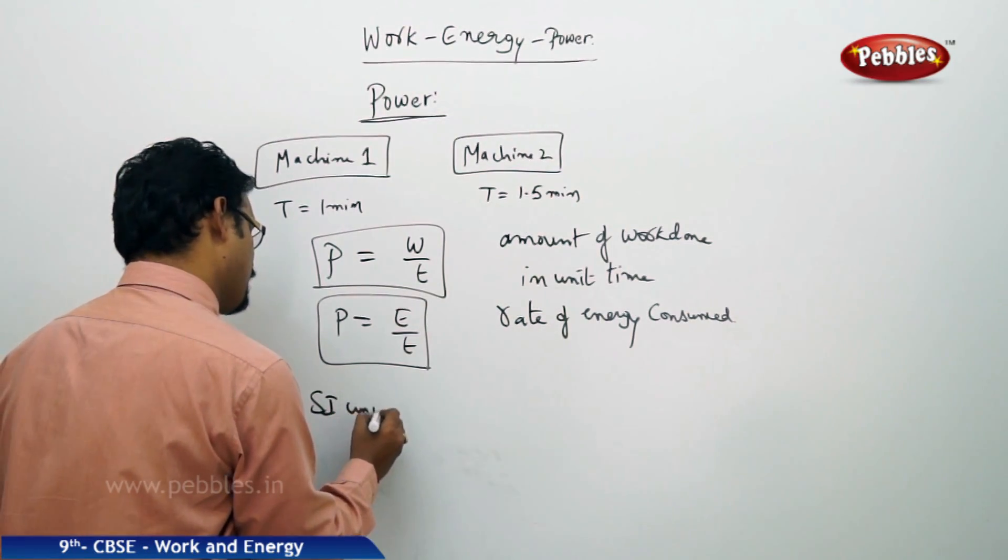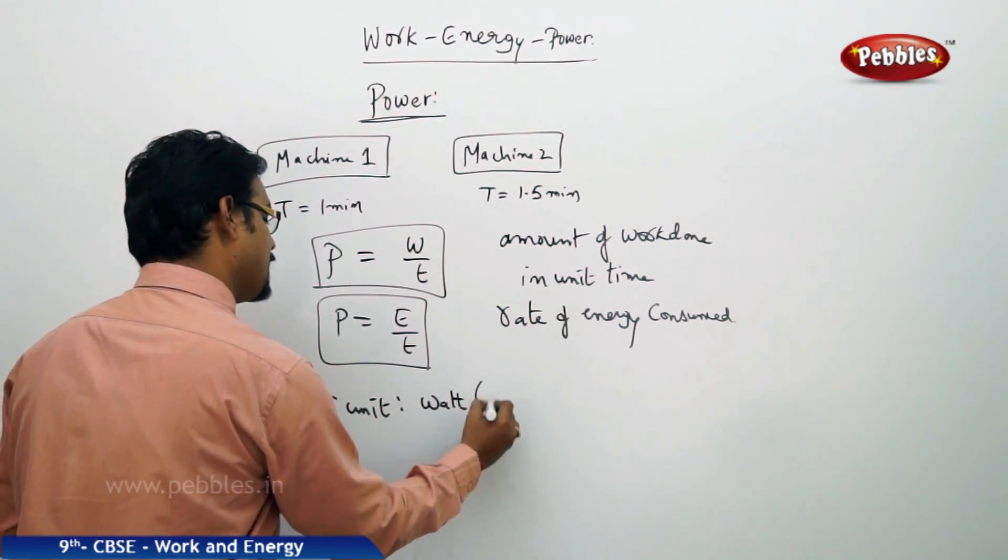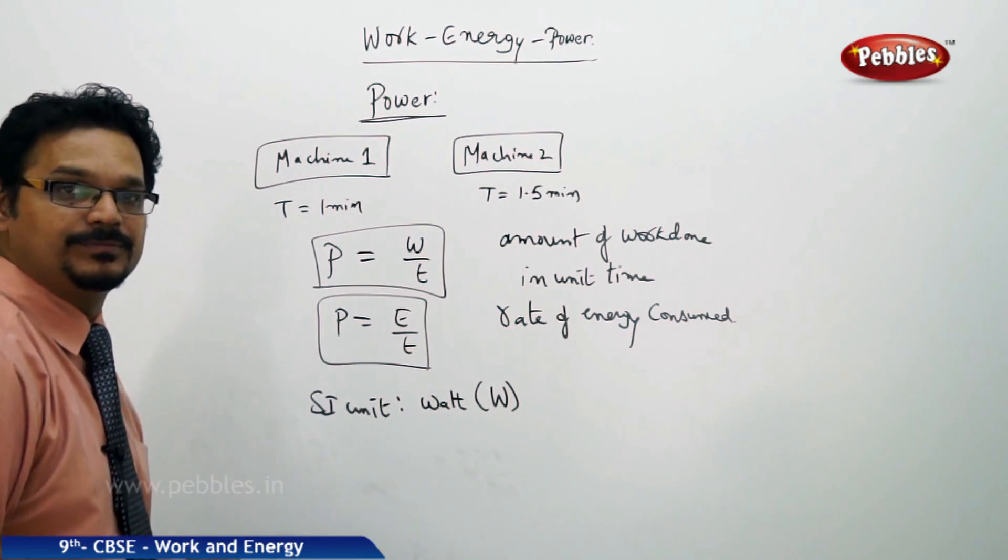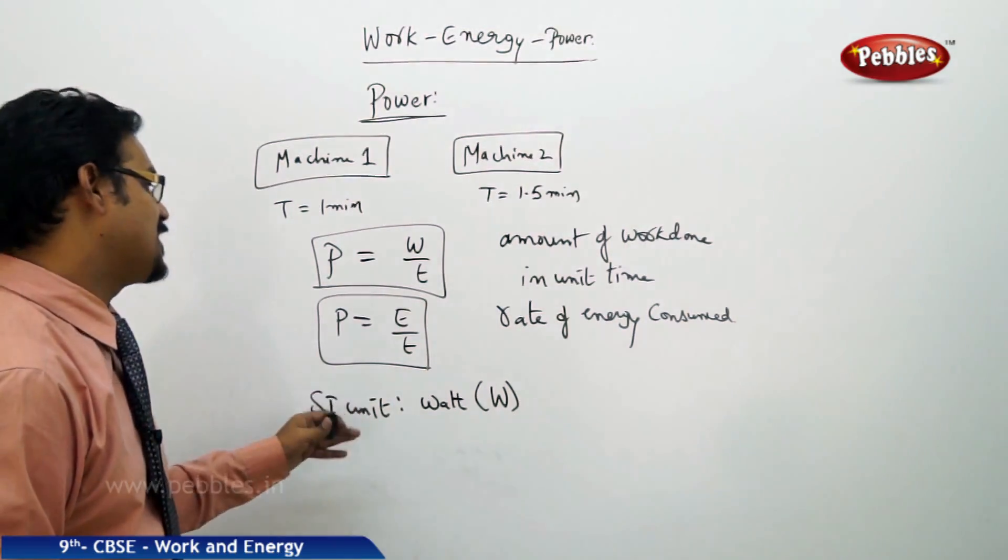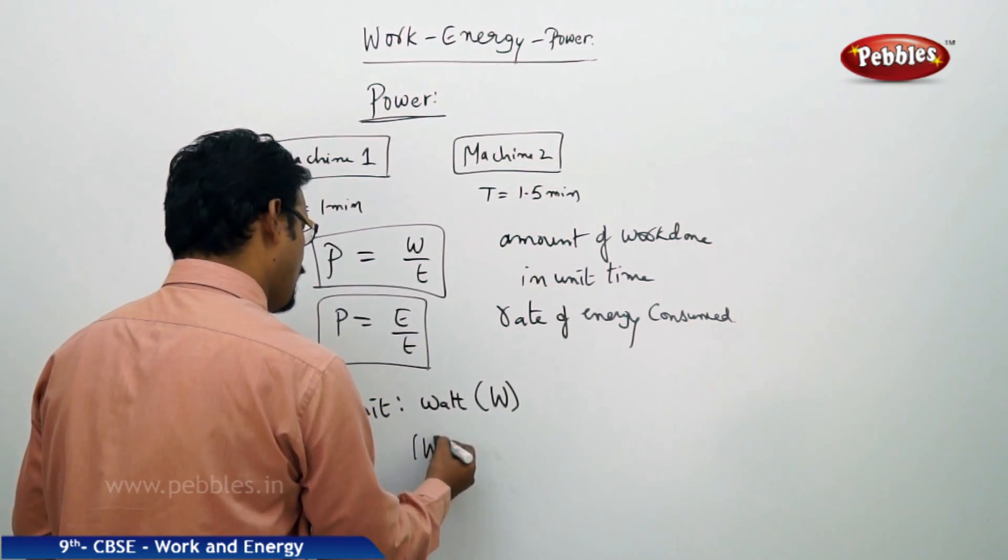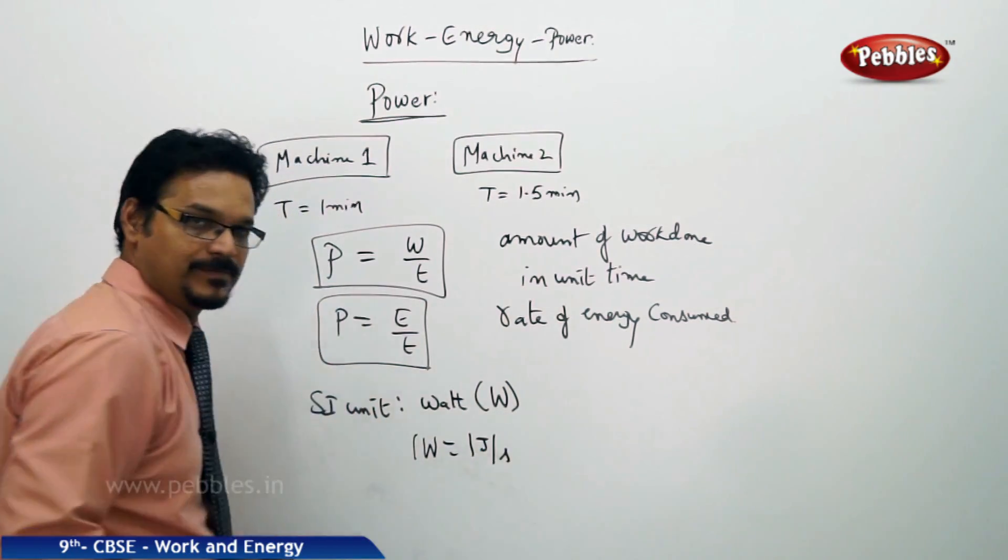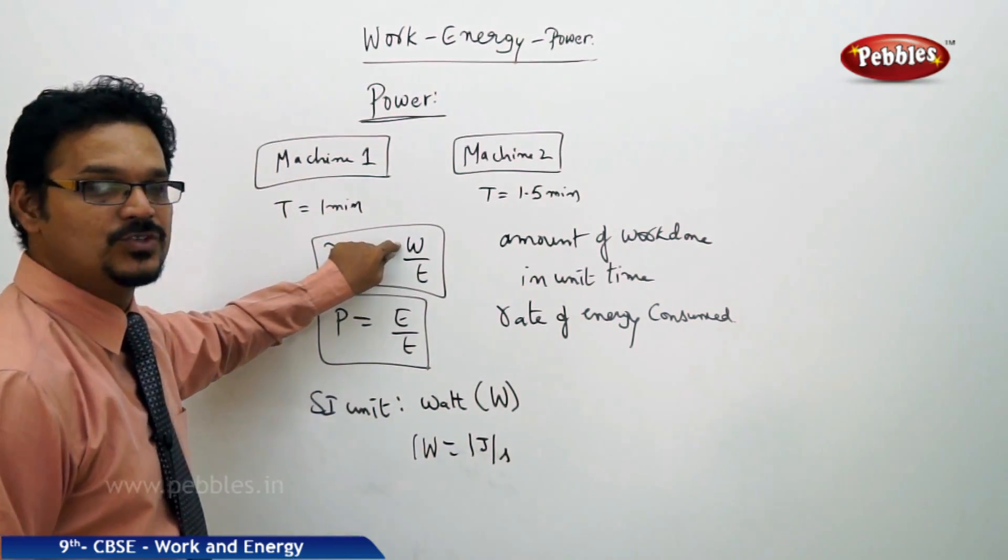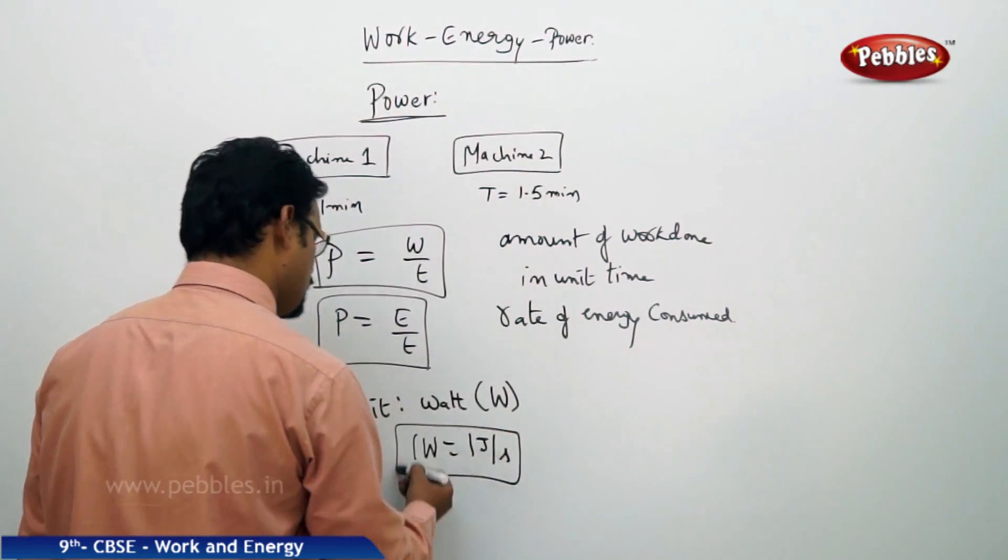The SI unit of power is watt (W-A-T-T), in short capital letter W. It's named after James Watt. And according to the formula, you can write 1 watt equals 1 joule per second, because work is in joules and time is in seconds.